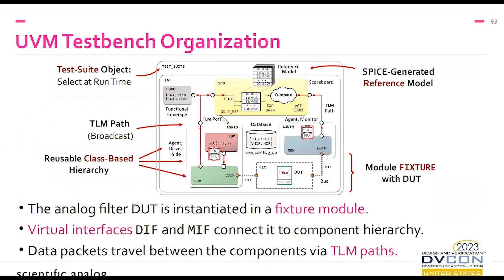Let's start with the overall organization. The rounded rectangles here symbolize class objects; the regular rectangles symbolize ordinary modules and submodules. The fixture submodule appears in dashed outline because we instantiate it in the UVM-TB top-level test bench module, not shown here — we'll drill down into that in section five.